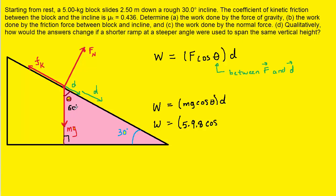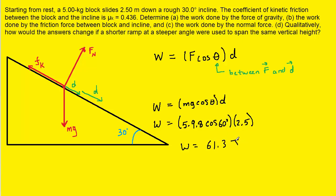So 60 degrees is the angle we plug in for the calculation of work done by gravity. Then we multiply by the magnitude of the displacement. Since the block is sliding 2.5 meters down the ramp, we plug in 2.5 meters. Make sure your calculator is in degree mode, and when you do that you should get 61.3 joules. This is the correct answer to part A.